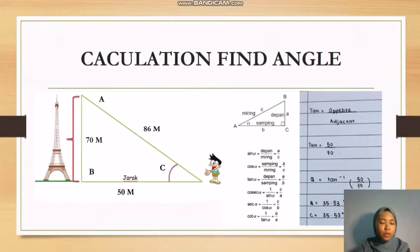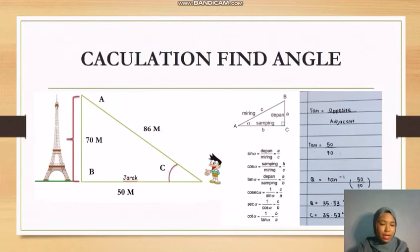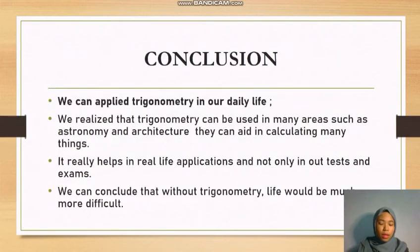Using the formula: tan(δ) = opposite / adjacent. The opposite value we obtained is 50, and the adjacent value is 70. This means tan(δ) = 50/70. After that, we move tan to the right side, giving us δ = tan⁻¹(50/70). Using a calculator, the result for the angle is δ = 35.53 degrees.